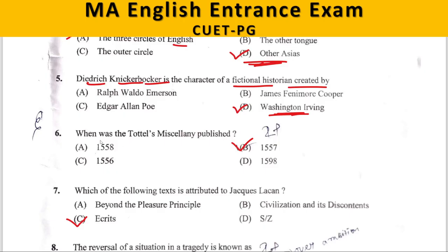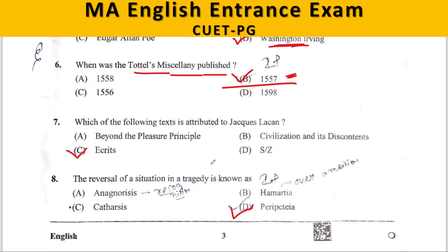Next question: When was Tottel's Miscellany published? The correct answer is B — 1557. Here we don't have to analyze anything; either you know it or you don't.